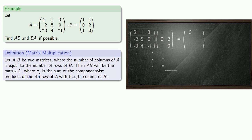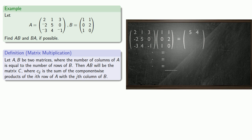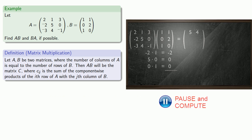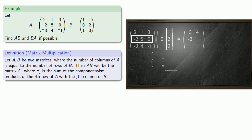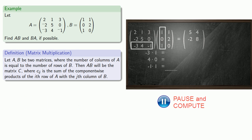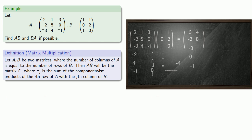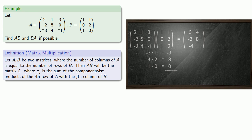We take the first row of A times the second column of B, find the component-wise products, and sum them, and that gives us our first row, second column entry. The second row of A times the first column of B gives us the entry in the second row, first column. The second row of A times the second column of B gives us the entry in the second row, second column. We take the third row of A times the first column of B to get the entry in the third row, first column. And finally, we take the third row of A times the second column of B to get the entry in the third row, second column. And this will be our matrix product AB.